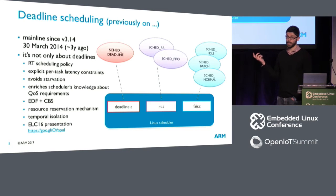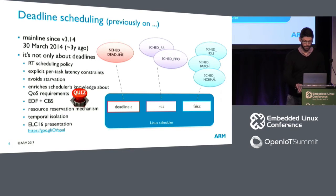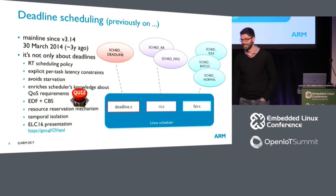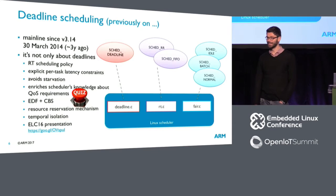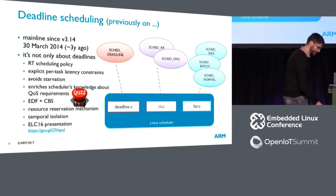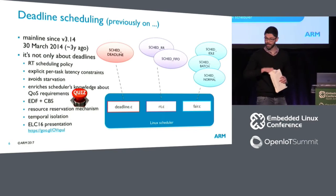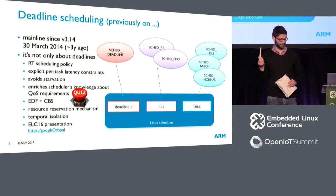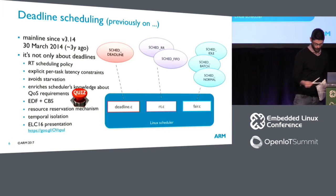The difference is that using SCHED_DEADLINE, you can explicitly give the kernel per-task latency constraints. There is an API with which you can give this information to the kernel. The algorithm itself, by design, avoids starvation. In general, it enriches the scheduler's knowledge about the quality-of-service constraints that tasks might have. It implements EDF and CBS — who can tell me what EDF and CBS stand for? The winner gets a pen.